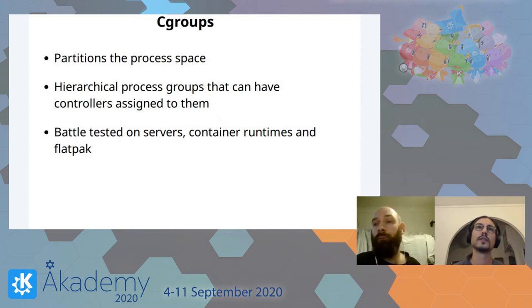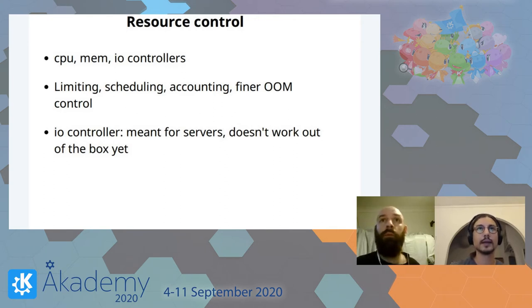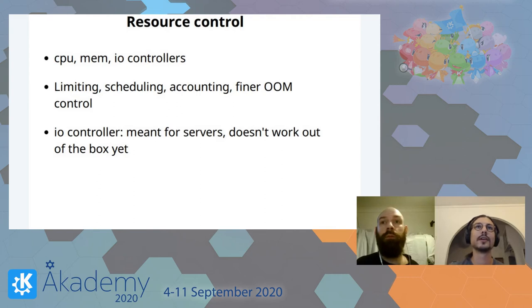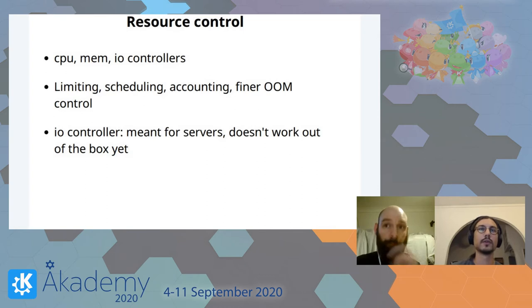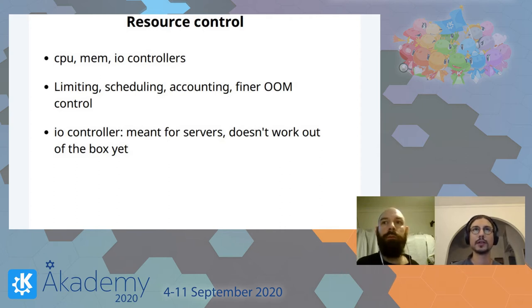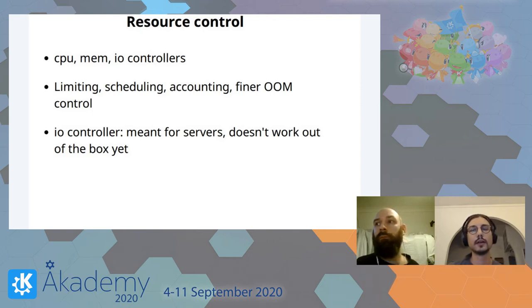Once you've got these groups you can attach controllers to them. There are three main controllers: the CPU one that affects CPU usage, the memory one that affects memory, and the IO one which affects disk I/O. They do three basic functions: limiting the overall usage of a resource, influencing scheduling, and accounting — meaning you can know at an application level how much CPU your application is using, which also translates to things like power and battery usage.